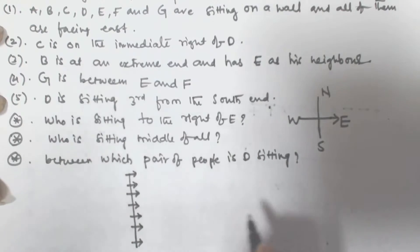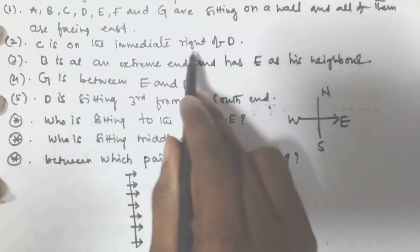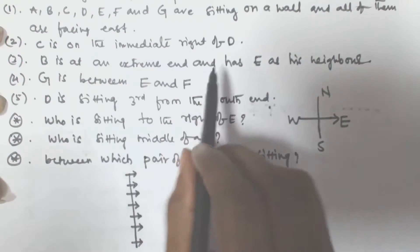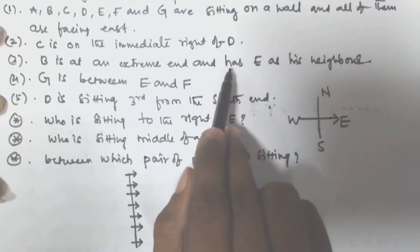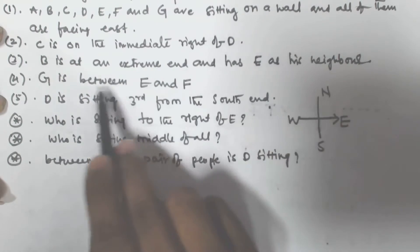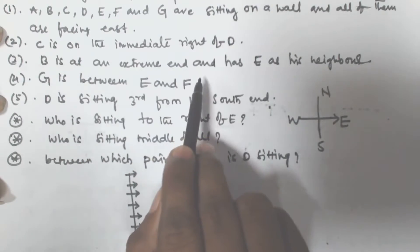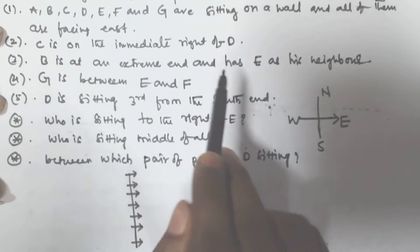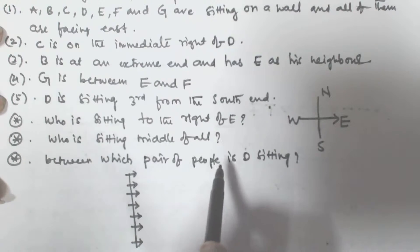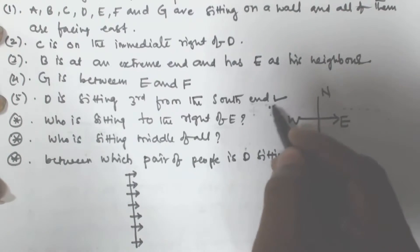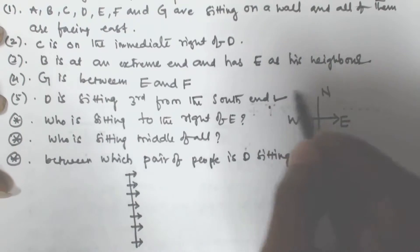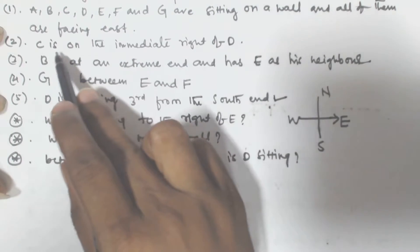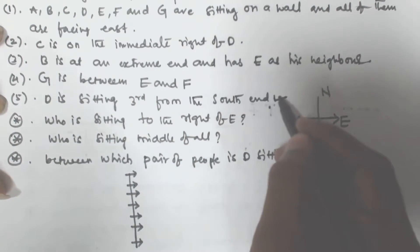All of them are facing towards the east. It is given that C is on the immediate right of D. B is at an extreme end and has E as his neighbor. G is between E and F. D is sitting third from the south end.